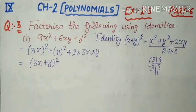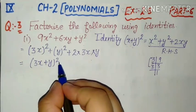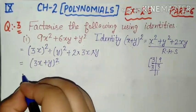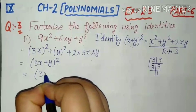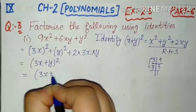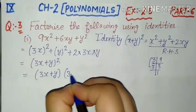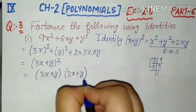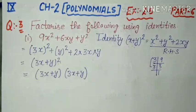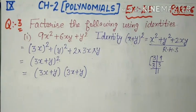Lekin humne iske factors banana hai — factorize karna hai, means uske factors banana hai. So power 2 hai, means usko hum 2 times likh sakte hain. So iske factors kya banenge? (3x + y) and (3x + y). Identity ka use karke hame iske factors mil gaye.